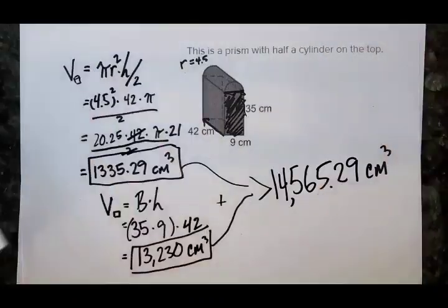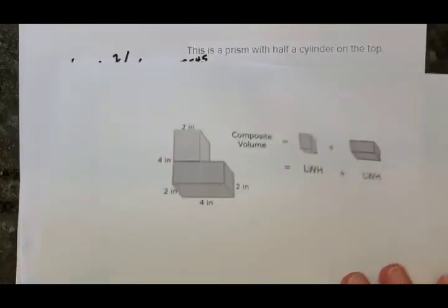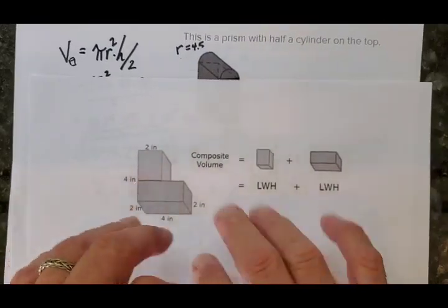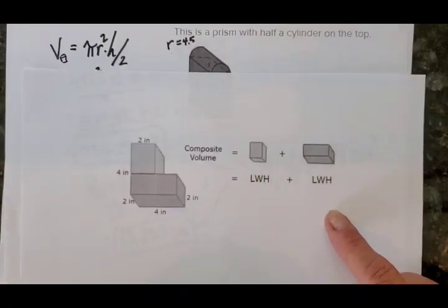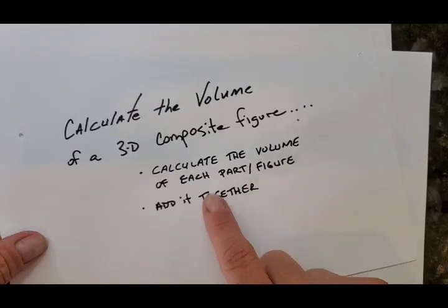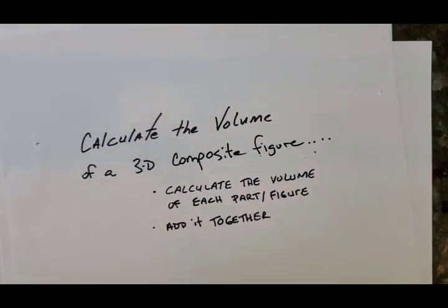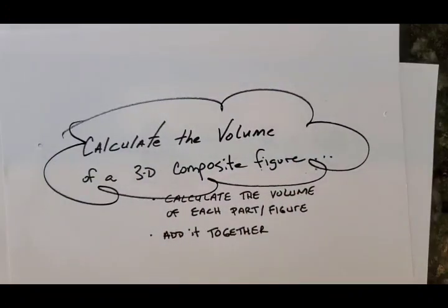Just a quick reminder: we took some composite three-dimensional figures, mentally broke them into different figures, found the volume of each part, and at the end added them together. That's how we calculated the volume of a three-dimensional composite figure. There are other ways to do it, but this way will work for you quite often. Take care.